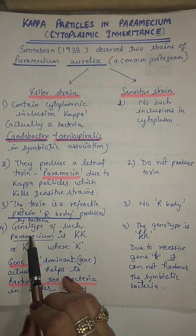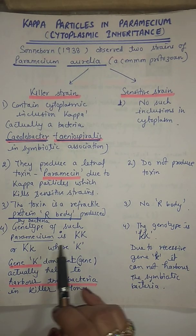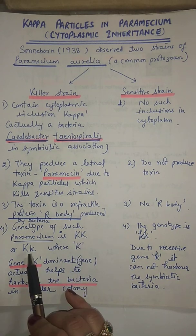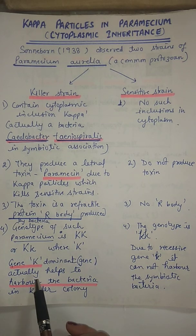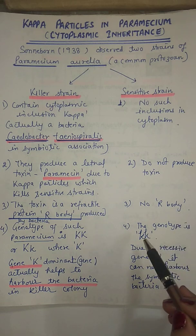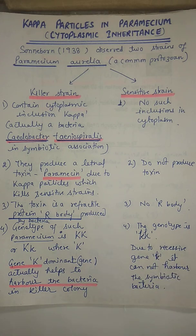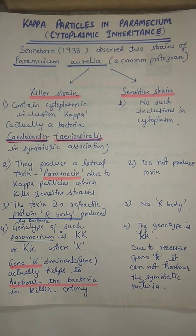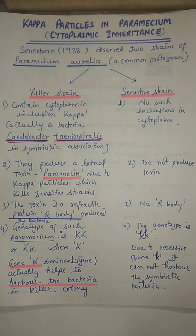The genotype of the killer paramecium is KK, where K is a dominant gene which harbors the bacterial colony in the cytoplasm, whereas the genotype of the sensitive strain is kk — a recessive genotype not able to harbor the symbiotic bacterial colony. Thus, the existence, production, proliferation, and maintenance of kappa particles is controlled by the dominant gene K present in the nucleus.